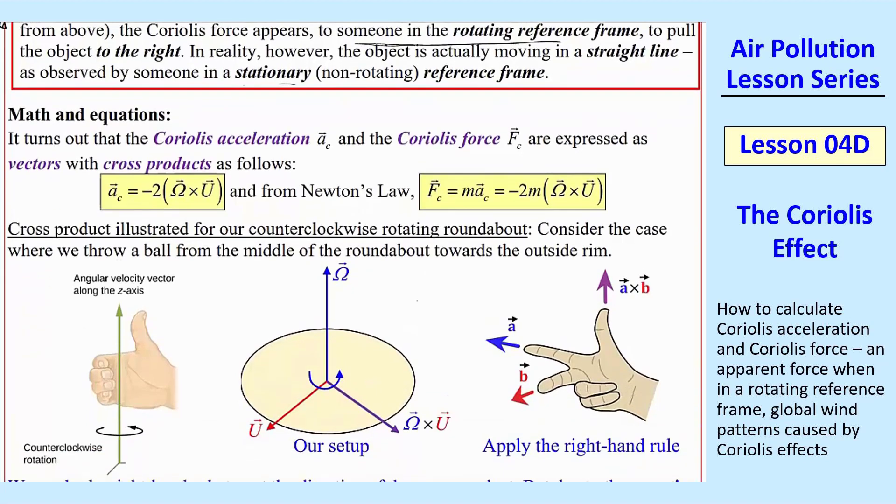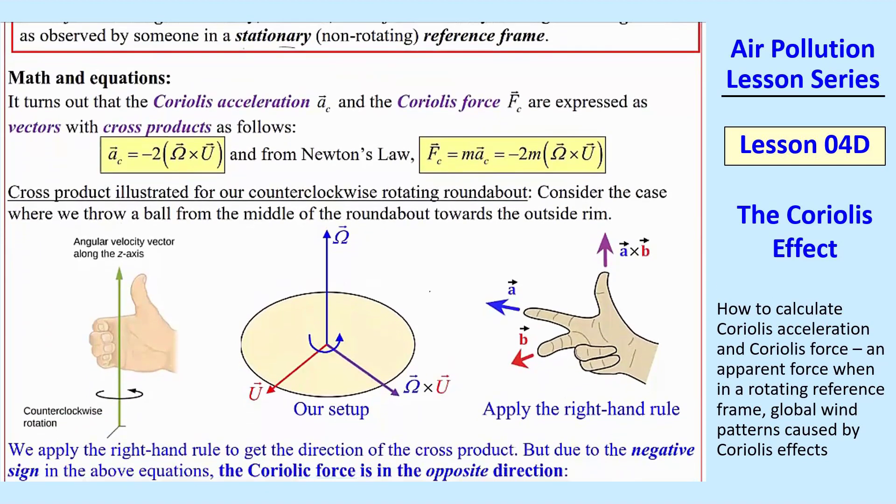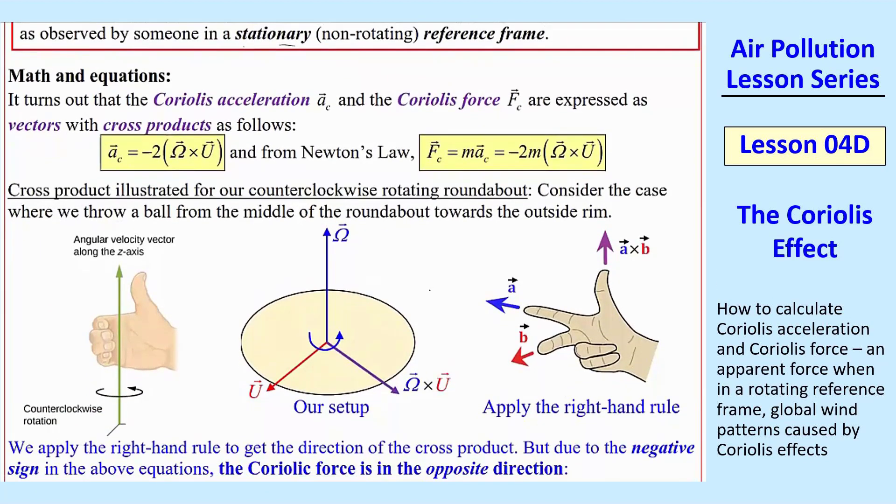Now let's do some math and equations. It turns out that the Coriolis acceleration and the Coriolis force are cross products. They're vectors with cross products as follows. Coriolis acceleration turns out to be negative 2 omega cross u. And then from Newton's law, fc is just mac, so you just add a mass in there. So you get this equation.